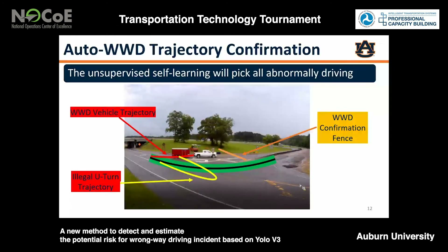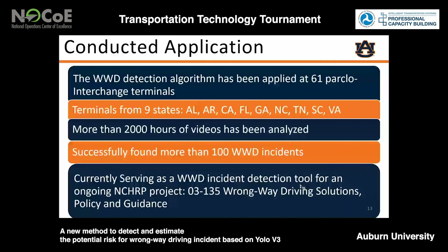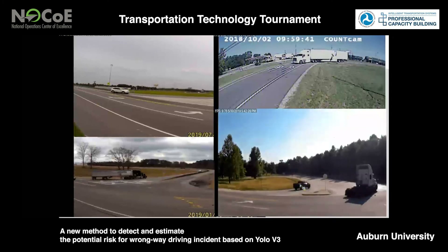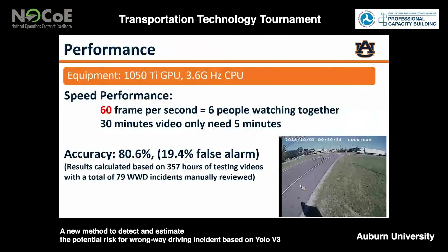Because abnormal driving doesn't necessarily mean wrong-way driving, we still need one more step. We draw a line such that if the incoming trajectory intersects with that orange line, the system will finally confirm that the trajectory is wrong-way driving. Our proposed system has been applied to an ongoing NCHRP project for wrong-way incident data collection. Till now, our algorithm has helped us monitor 61 interchange terminals located in nine different states, with more than 2,000 hours of video analyzed, helping us find more than a hundred wrong-way driving incidents. The video shown here is a wrong-way driving incident found by our system — this vehicle entered the exit ramp by mistake, which is very dangerous and could result in a severe crash.